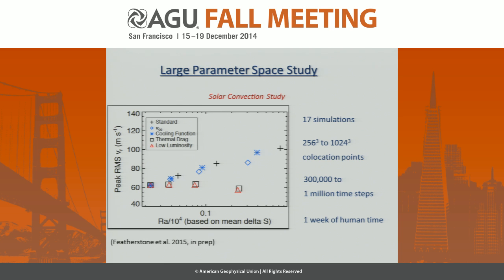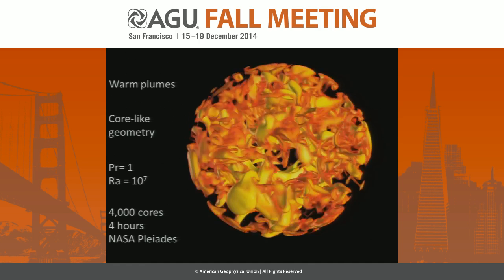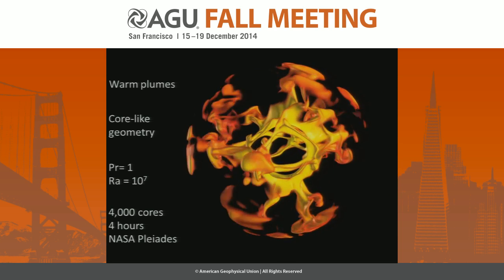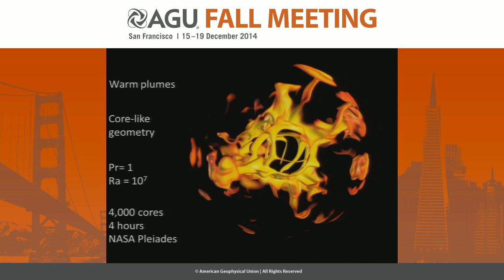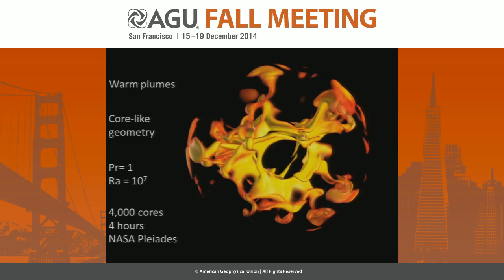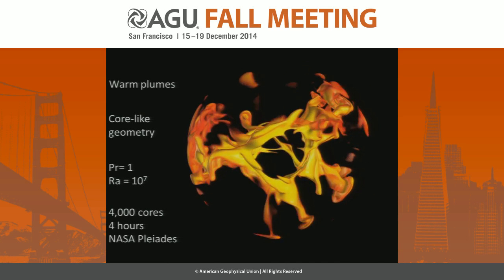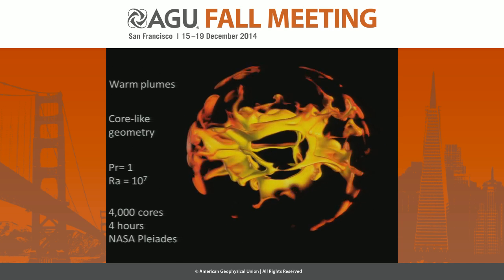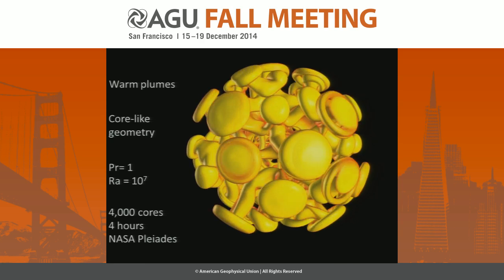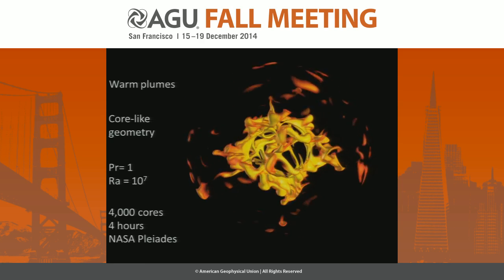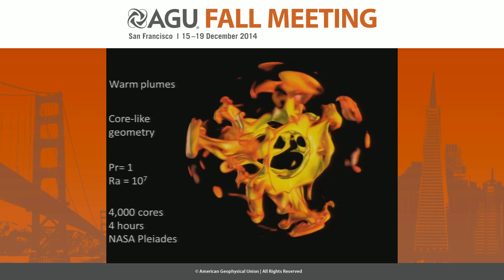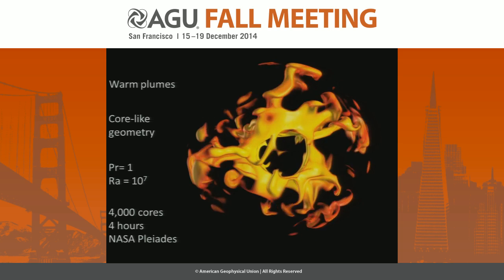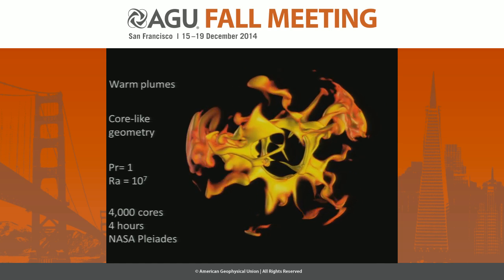This is an example of a vis run done in about four hours on NASA Pleiades with Westmere cores. This is Boussinesq convection in the geometry of the Earth's core, but non-rotating. What you're seeing are only the warm thermal plumes coming off of the inner core — the cool plumes are rendered invisible. This has a Prandtl number of one and a Rayleigh number of about 10^7. It took a lot more time to move the data over than it did to do the run.